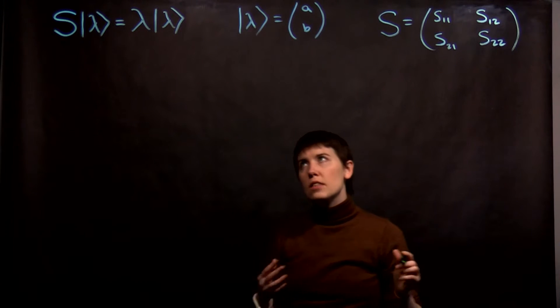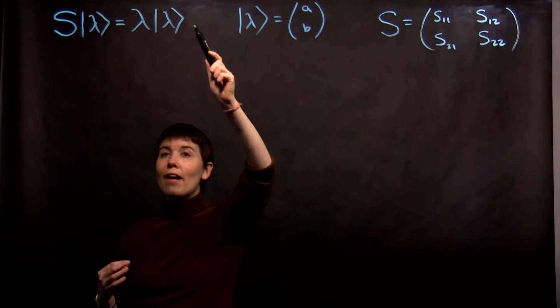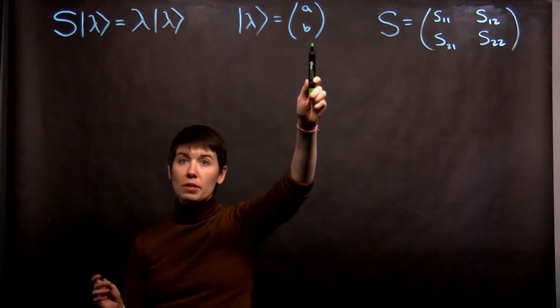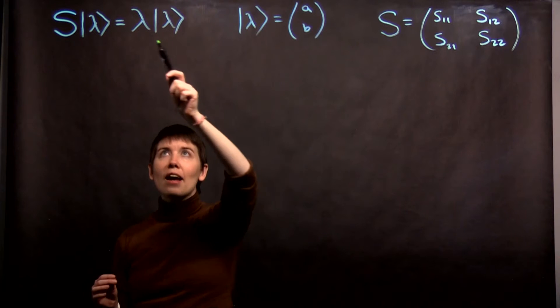But the idea is that you don't know what your eigenvector is, some state. This is a spin one-half system for now, so it has two elements which are unknown, and the eigenvalue itself.